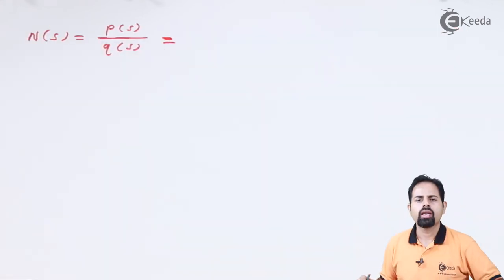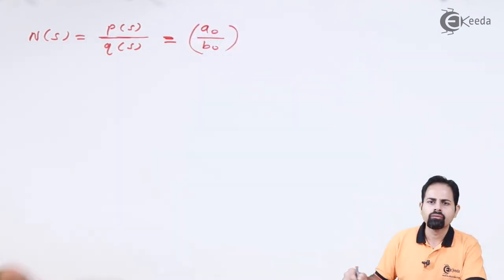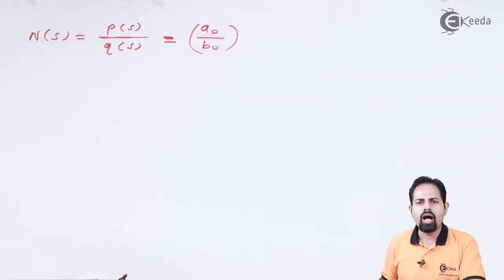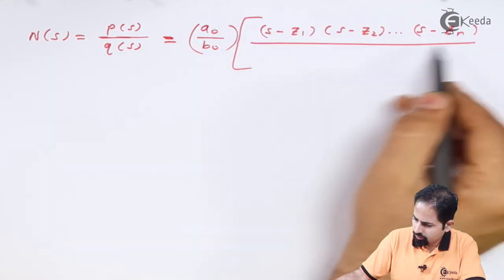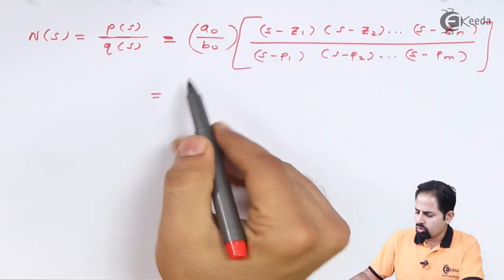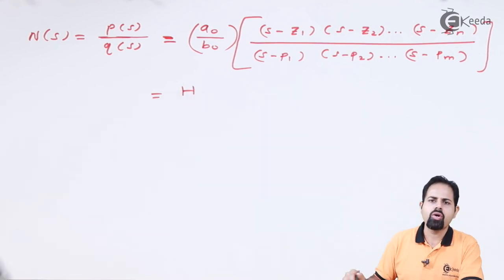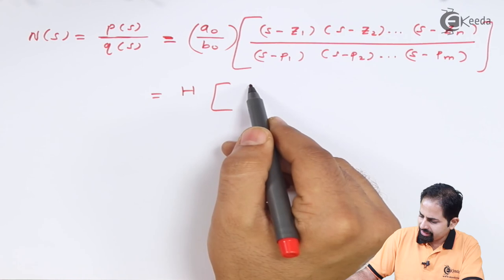Now I am going to take a₀ common, and remaining terms I am directly writing in factorized form. And this factor a₀ upon b₀ we call it as h, that is called as scale factor, and this remaining term will be as it is.